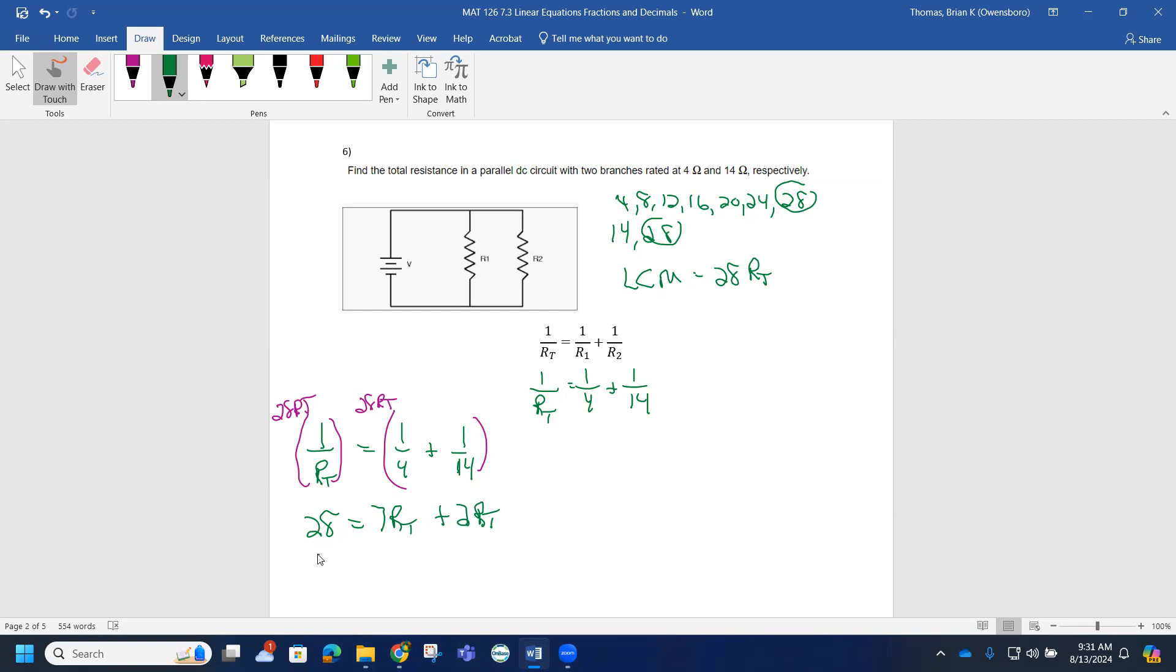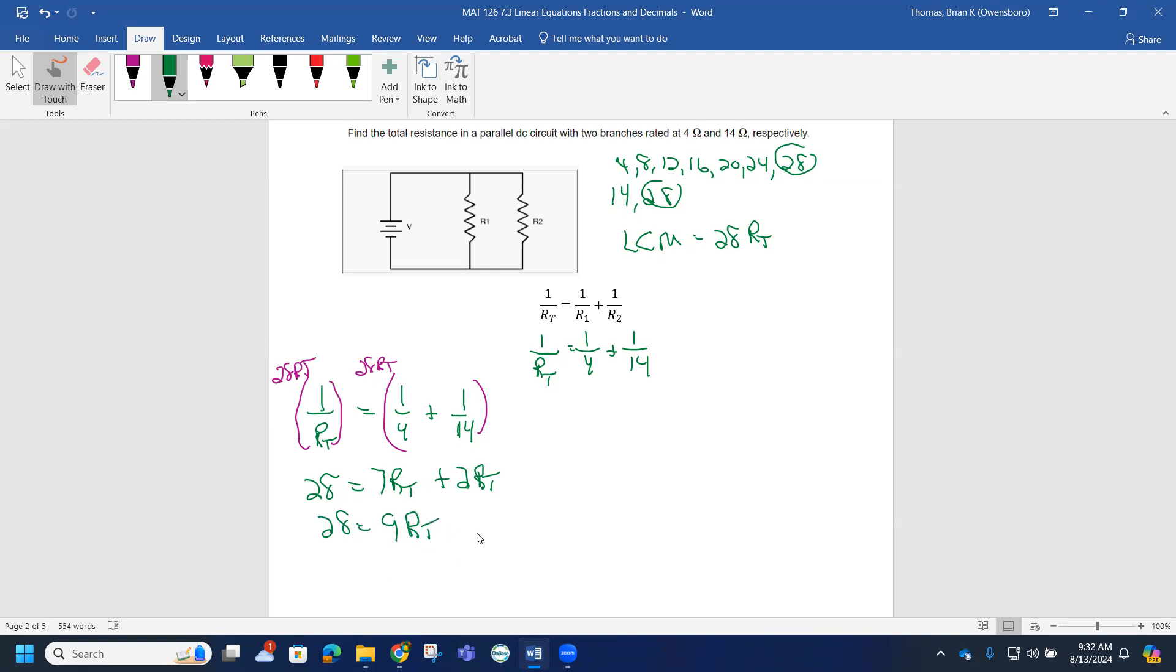What we end up with in this problem is a 28, and then since these are like terms, you're going to have a 9Rt. This allows us to solve for the total resistance. To get the coefficient to turn into 1, we can divide both sides by 9. We're going to have 28 divided by 9. Nine won't go into that evenly—if I do 9 into 28, it will go in three times. Three times nine is 27 with a remainder of 1, so it's going to be 3 and 1/9.